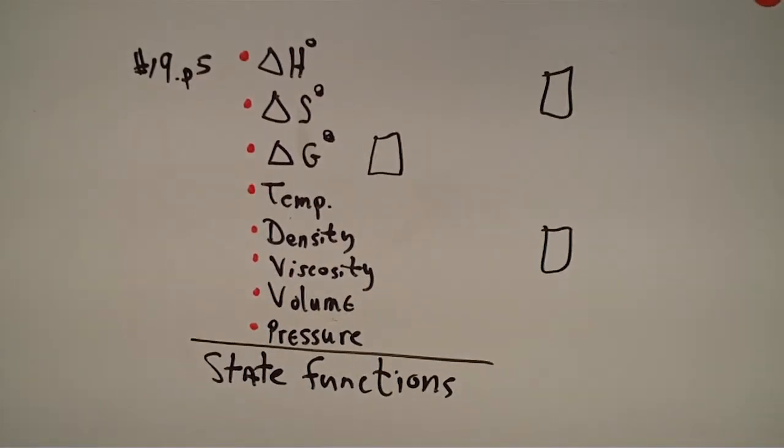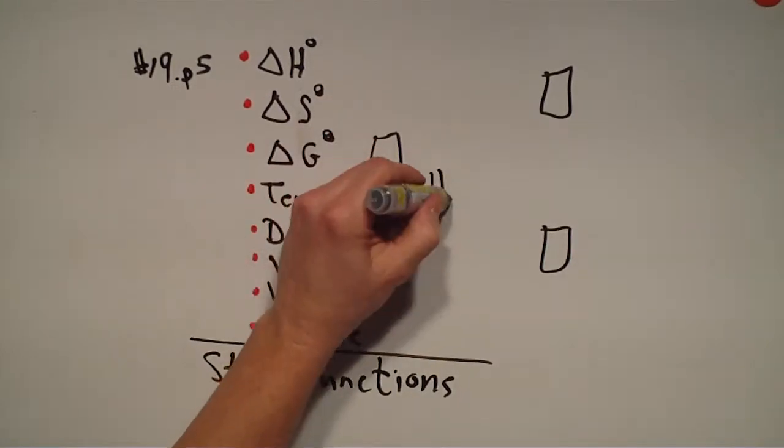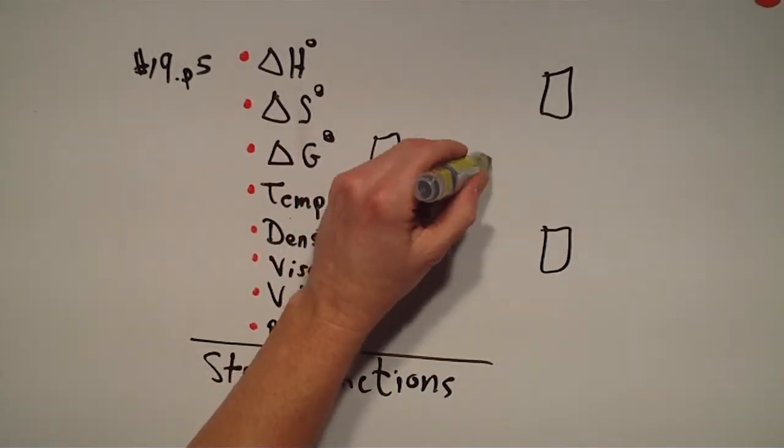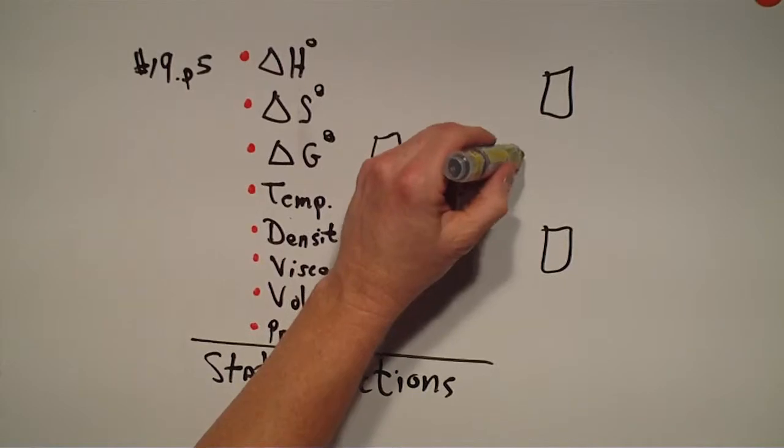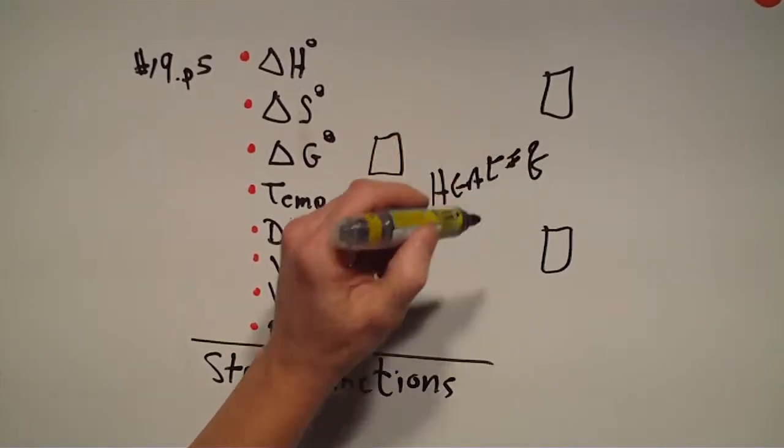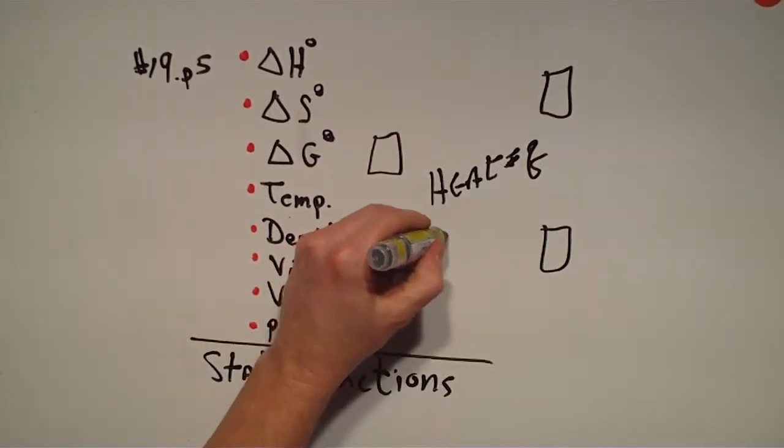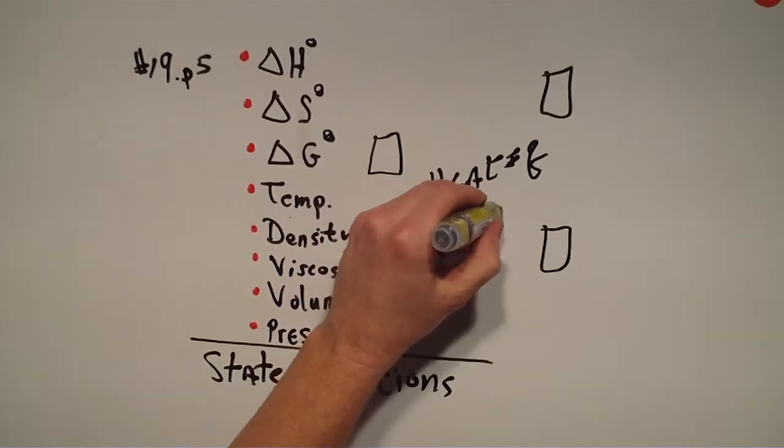On the other hand, there are some things that are not state functions. The first ones that come to mind to me are heat, which is the symbol Q, and work, which is the symbol W.